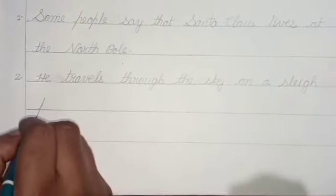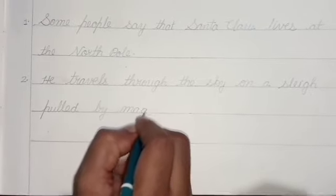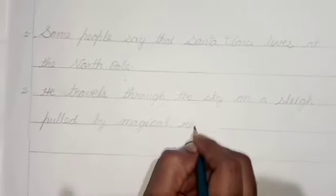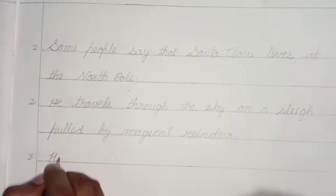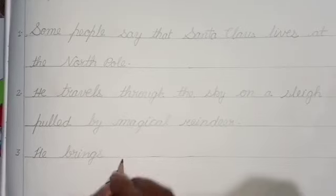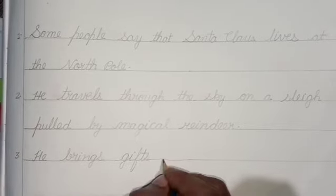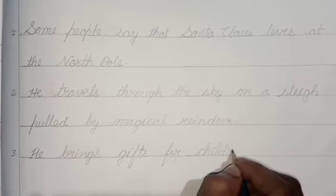He travels through the sky on a sleigh pulled by magical reindeer. Third point. He brings gifts for children.